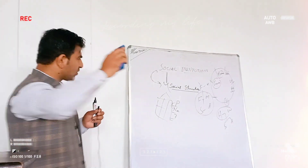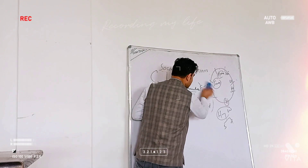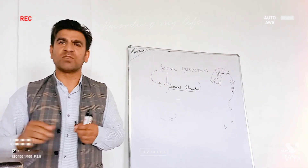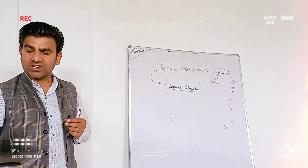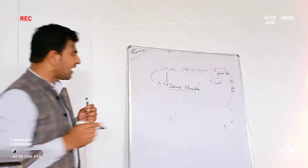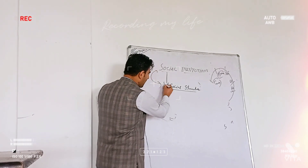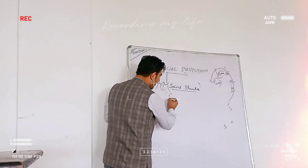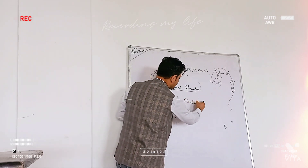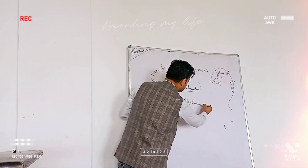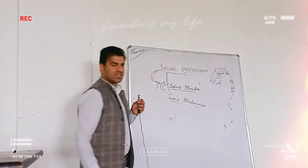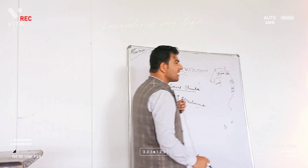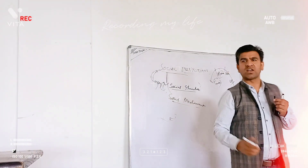Moving ahead, when talking about social institutions, number one, they have a set-up social structure. Number two, a social institution is also a set-up social mechanism. What basically is a mechanism? Mechanism usually means something which is performing some function.